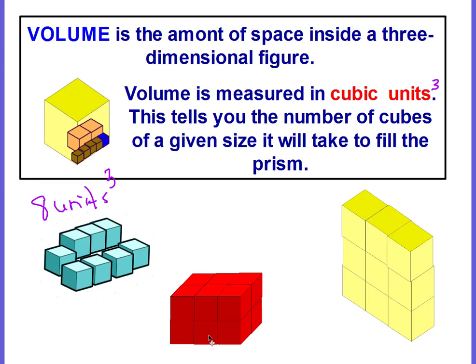Looking at our red example, you can see that we have one, two, there are three cubes in a row. There are two rows that make up the base, so that's six. And then how many floors do we have? We have one floor, two floors. So that would be six times two, which would be 12 units cubed.